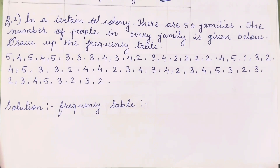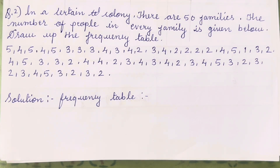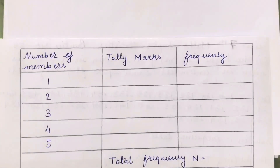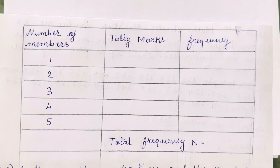Let's move on to the next question. In a certain colony, there are 50 families. The number of people in every family is given below — draw up the frequency table. The numbers given are from 1 to 5, so let's calculate. You all have to prepare the frequency table in this way.